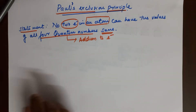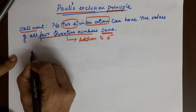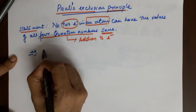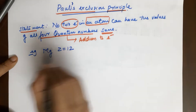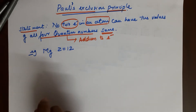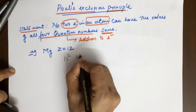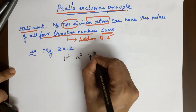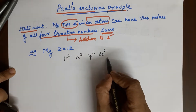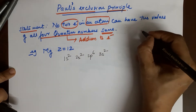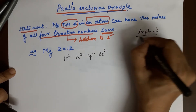Let me take two examples. The first example is magnesium, with atomic number 12. The electronic configuration for magnesium is 1s² 2s² 2p⁶ 3s². If you are unsure how to arrive at this, please refer to my video on the Aufbau principle.